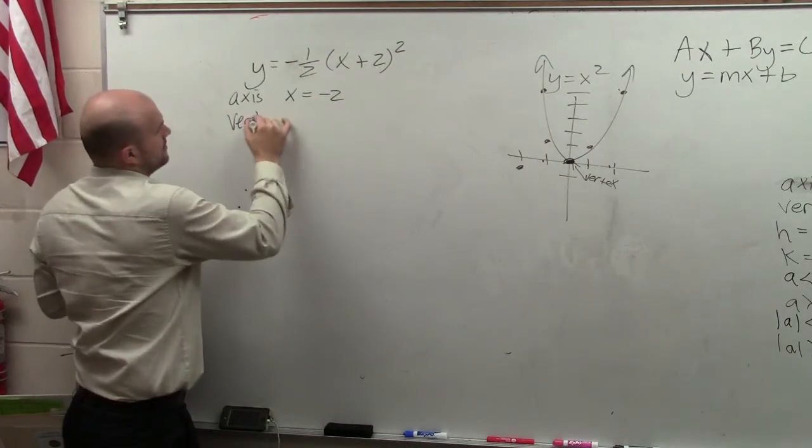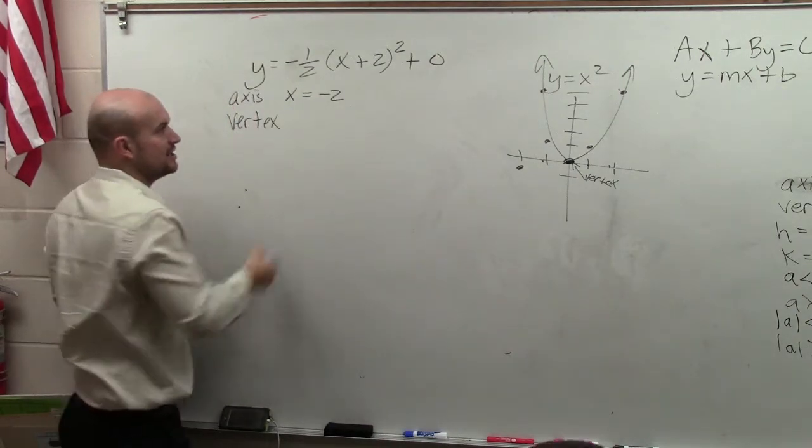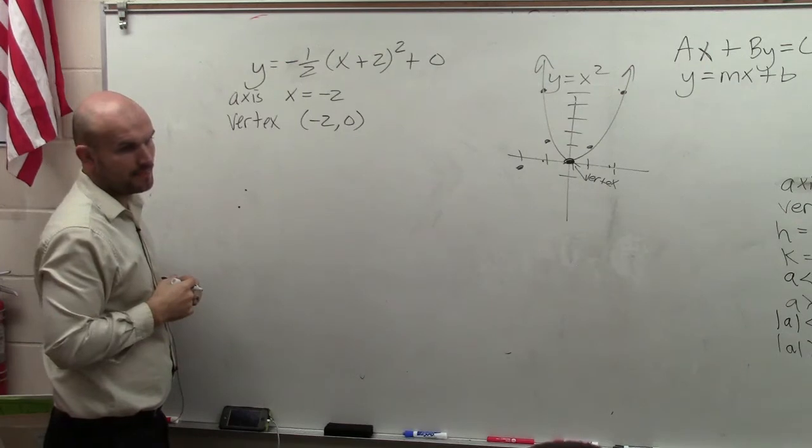Our vertex, you guys can see we don't have a k. So it can be the same thing as adding 0. So my vertex is negative 2 comma 0. Cool so far?